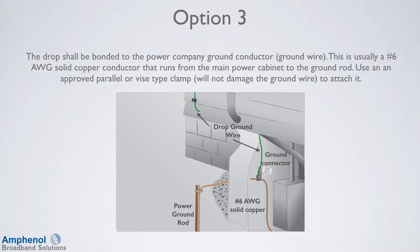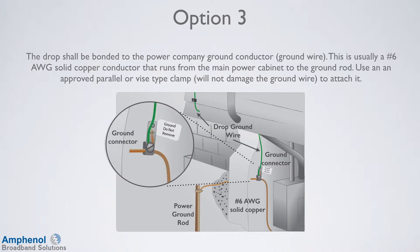In option number 3, the drop is bonded to the power company ground conductor or ground wire. This is usually a number 6 gauge copper wire or conductor that runs from the main power panel to the ground rod. Use an approved parallel or vice type clamp that will not damage the ground wire to attach it. Make sure the contact point is free of corrosion. Also visually ensure that the wire you are attaching to actually makes contact with the ground rod or grounding electrode.